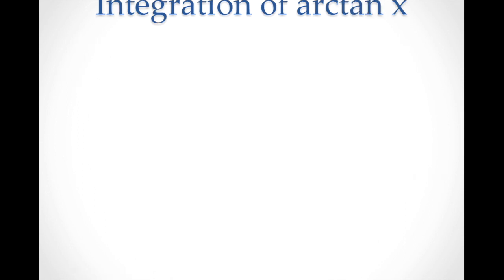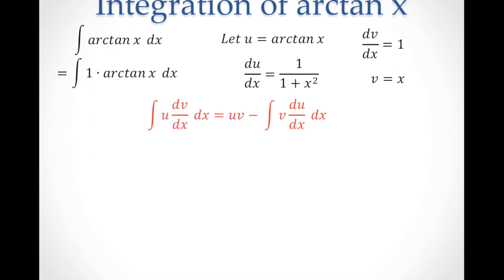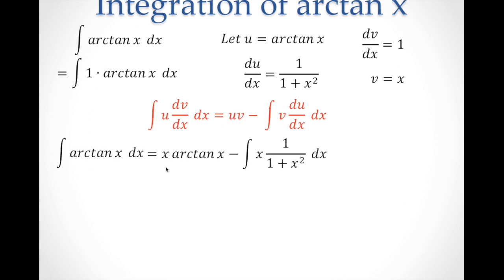Now let's go to the final inverse trigonometric function, which is arc tangent x. The strategy is the same: express this as a product of 1 times arc tangent x, let u = arc tangent x, whose derivative is 1 over 1 plus x squared. Our dv/dx = 1, so v = x. Using integration by parts, we have uv = x times arc tangent x, minus the integral of v times du/dx, which is x times 1 over 1 plus x squared, with respect to x.